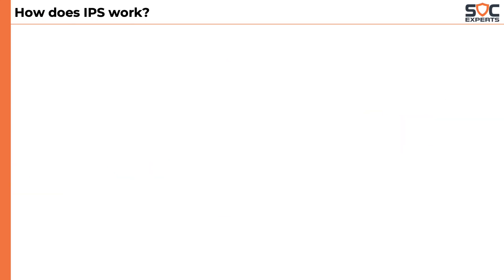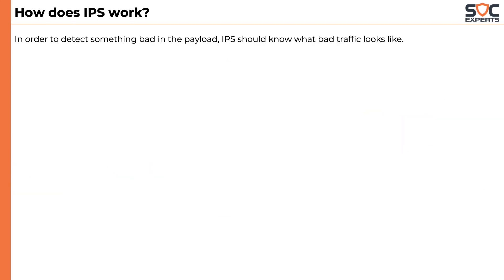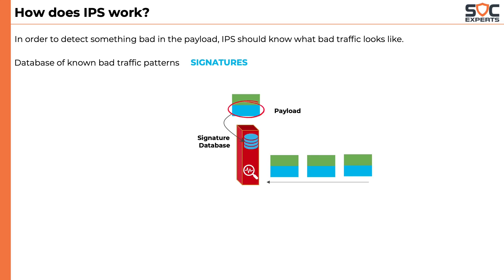So how does IPS work? In order to detect something bad in the payload, IPS should know what bad traffic looks like. That's why IPS is supplied with a database of known bad traffic patterns. These patterns are called signatures. Each passing packet will be picked up by IPS and the payload is scanned against the database of signatures. If there is a match, an alert is triggered. Note that signatures are updated on a regular basis, approximately once every 15 days.